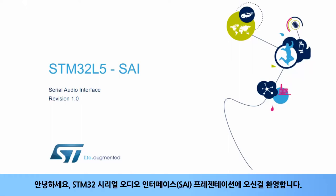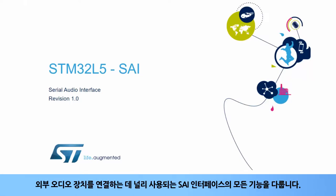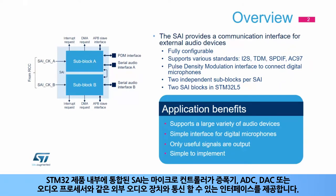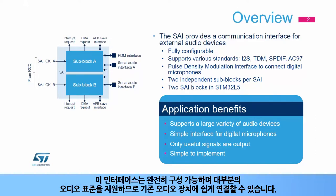Welcome to this presentation of the STM32 Serial Audio Interface, or SAI. It covers all the features of this interface, which is widely used to connect external audio devices. The SAI, integrated inside STM32 products, provides an interface allowing the microcontroller to communicate with external audio devices, such as amplifiers, ADCs, DACs, or audio processors. This interface is fully configurable and supports most audio standards, allowing easy connection to existing audio devices.